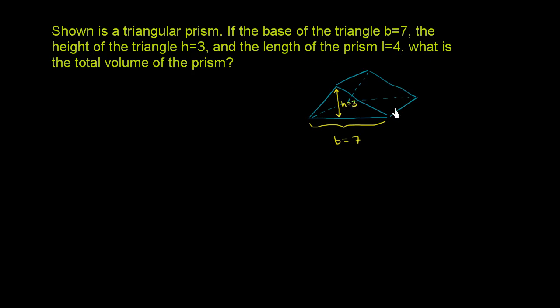And the length of the prism is equal to 4. So I'm assuming it's this dimension over here is equal to 4. So in this situation, what you really just have to do is figure out the area of this triangle right over here. We could figure out the area of this triangle and then multiply it by how much you go deep.